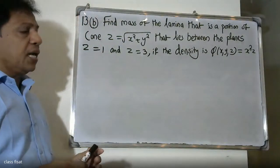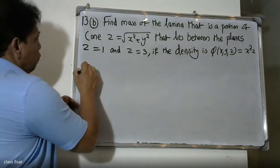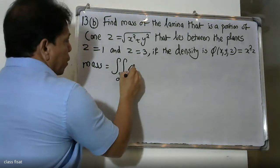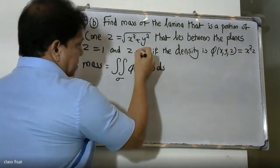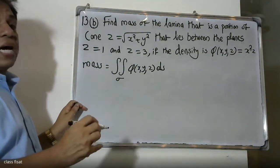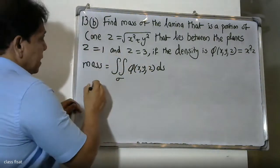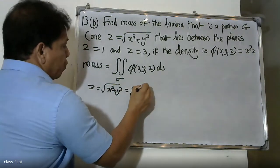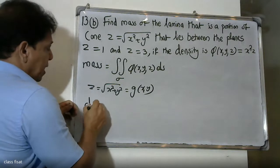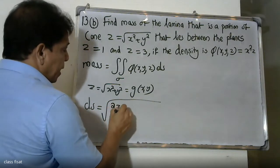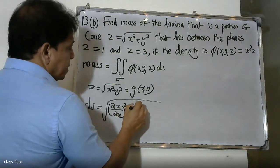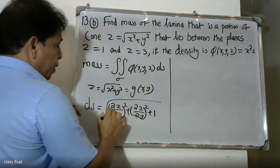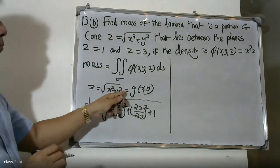For a problem finding mass of a lamina, mass is equal to the double integral of φ(x, y, z) dS. The surface element dS involves the formula: dS = √[(∂z/∂x)² + (∂z/∂y)²] dA, expressed as g(x, y).